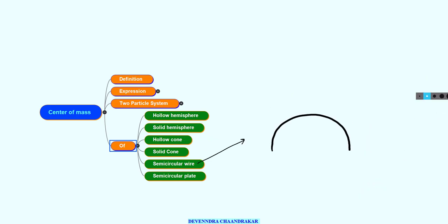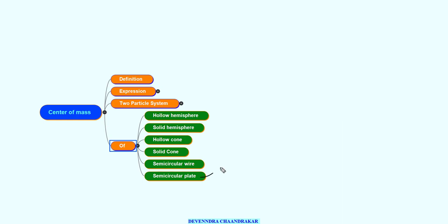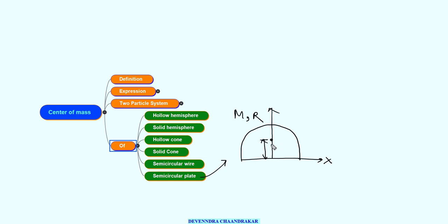For a semicircular wire of mass M and radius R, with the x-axis and y-axis defined, the center of mass is at a distance of 2r/π, giving coordinates (0, 2r/π, 0). For a semicircular plate of mass M and radius R, the center of mass is at 4r/3π from the origin, giving coordinates (0, 4r/3π, 0).